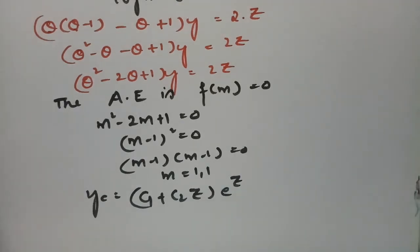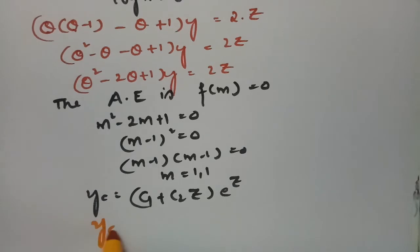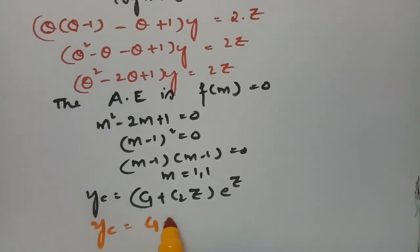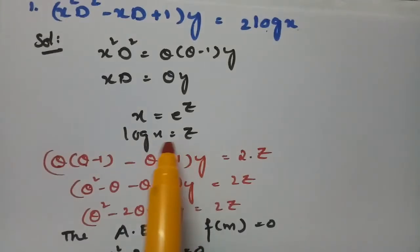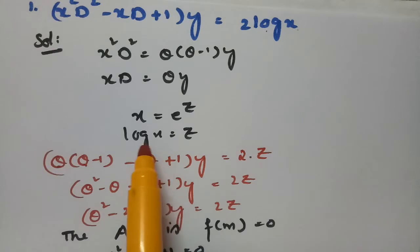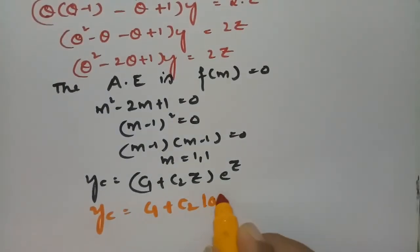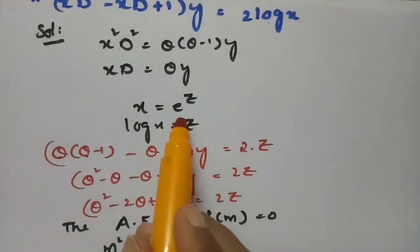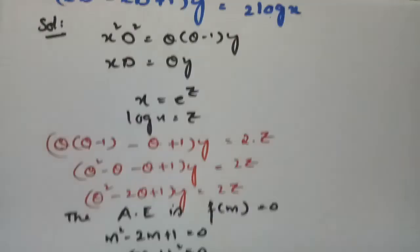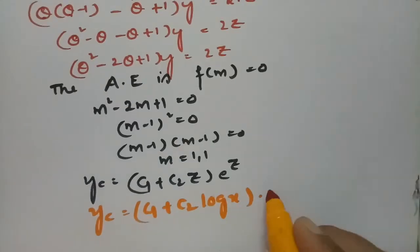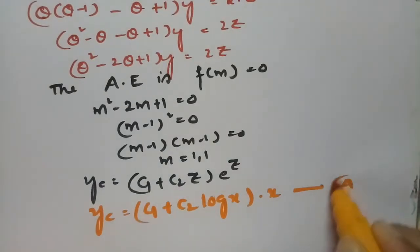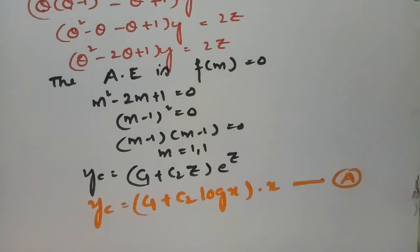Now I transform back to original variables. The yc value is (c1 + c2·log x)·x, since z = log x and e^z = x. This is our complementary factor.